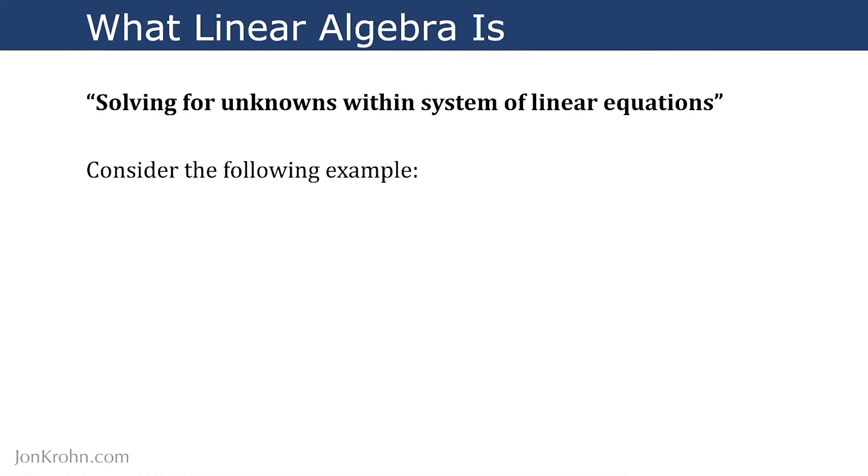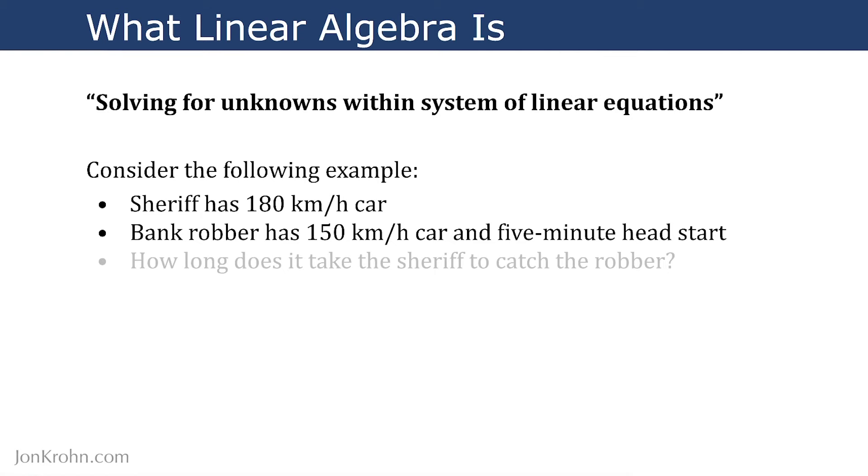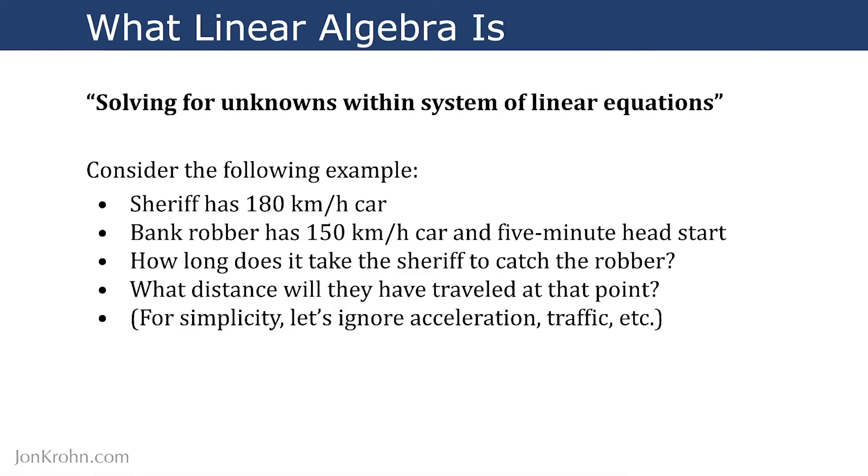So let's talk about that idea of a system of linear equations, multiple linear equations, where we're solving for unknowns like x across several equations simultaneously. So here's an example. Let's say a sheriff has a car that travels at 180 kilometers an hour. A bank robber has a slightly slower car that goes 150 kilometers an hour, but that bank robber gets a 5-minute head start on the sheriff. So how long does it take the sheriff to catch the robber? And what distance will they have traveled at that point? For simplicity, let's ignore acceleration traffic and we'll just assume that they're traveling in a straight line in one direction.